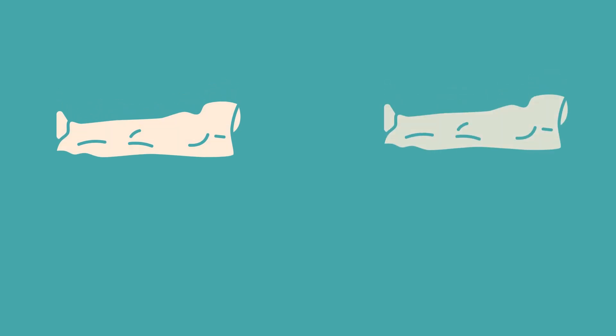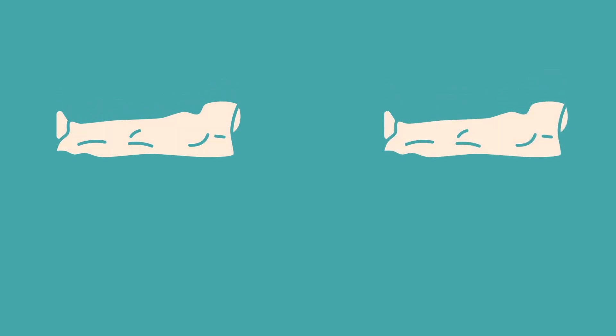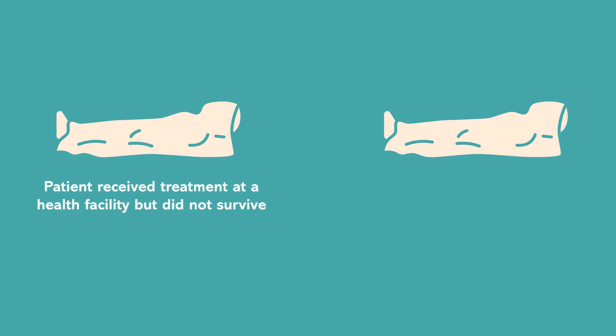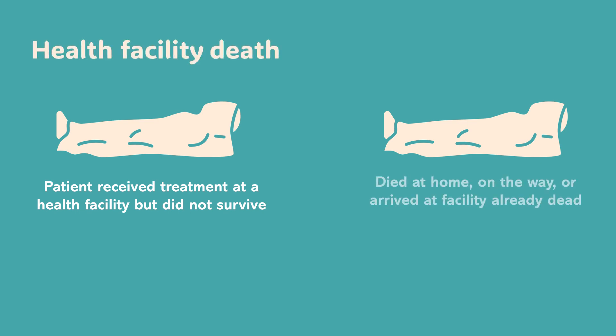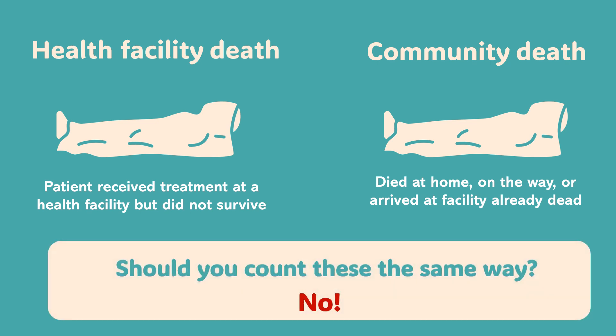To understand the problem, picture this. You're monitoring a cholera outbreak. Two people have tragically died from cholera. The first person passed away at a health facility despite receiving treatment — this is a health facility death. The second person died at home, never reaching care — this is a community death. Community deaths include people who died at home, died on the way to a facility, or arrived at a health facility already dead. Same disease, same tragic outcome. But here's the crucial question: should you count those two deaths the same way?